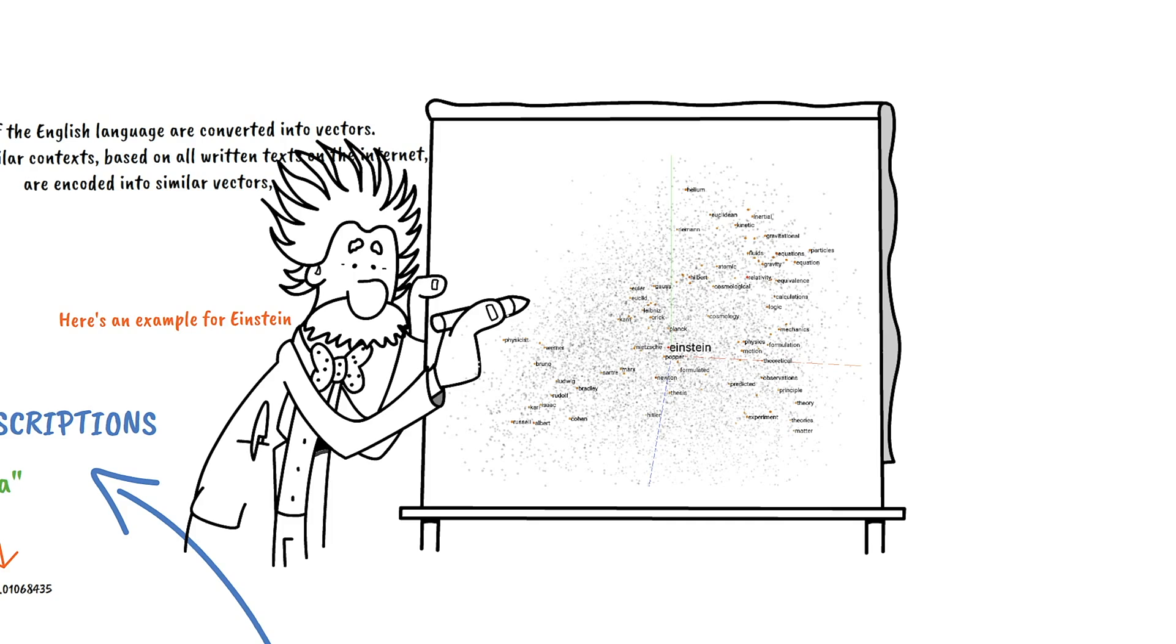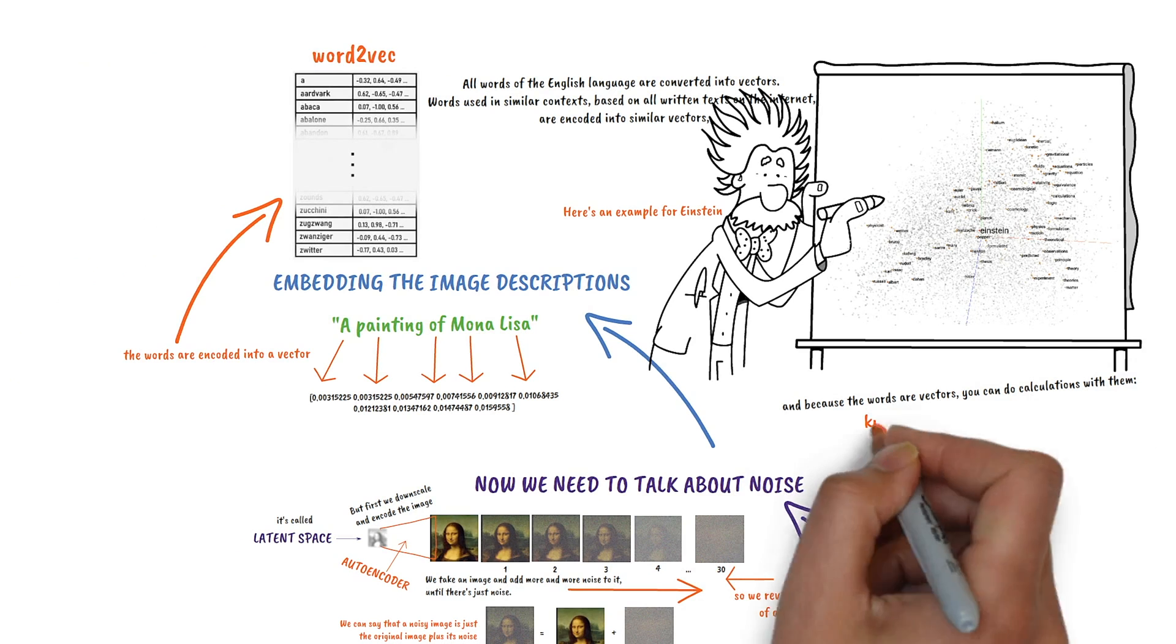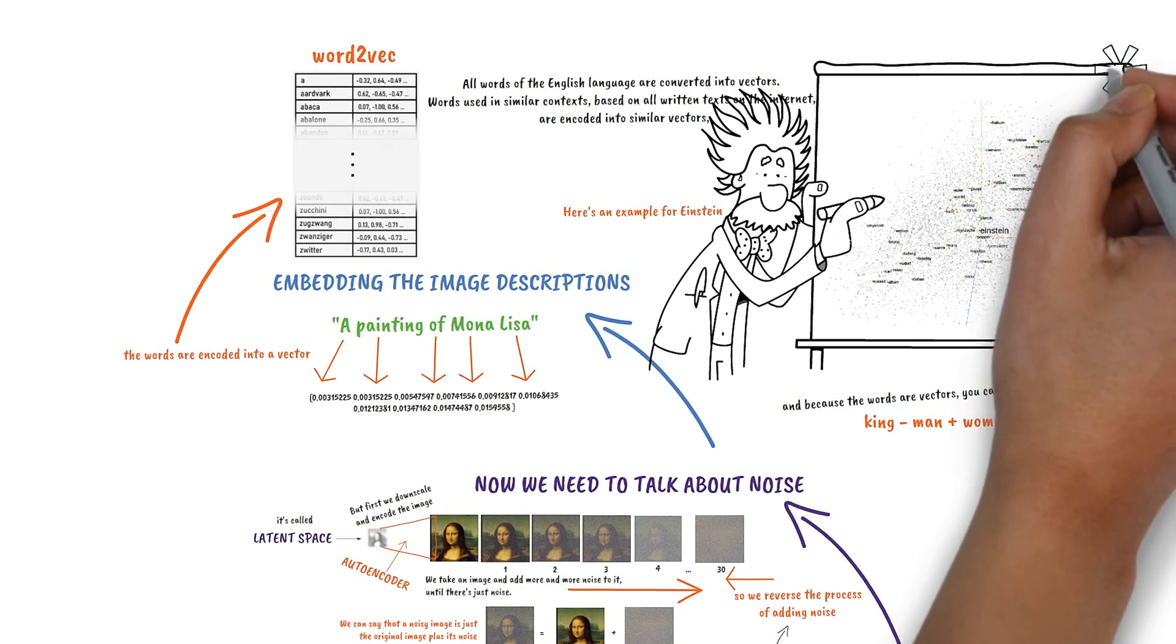And since words are vectors, you can do calculations. For example, king minus man plus woman equals queen.